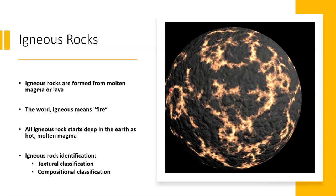Igneous rocks, as you saw in the previous video, are formed from magma or lava. They either cool on the surface or they cool below ground. If they cool below ground, they are considered cooled from magma; if they cool on the surface, they're considered cooled from lava. The word igneous means fire, and all igneous rocks will start deep in the earth as molten magma. These rocks start molten or melted, and then they are either erupted or crystallized below ground and turn into solid rock.